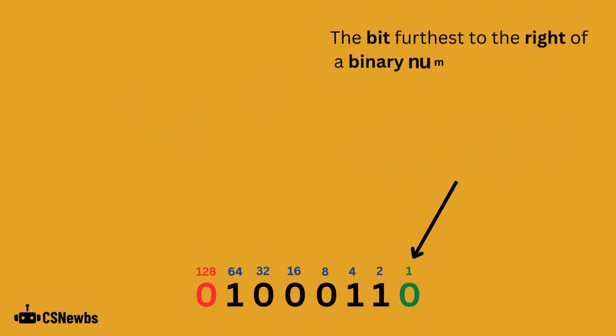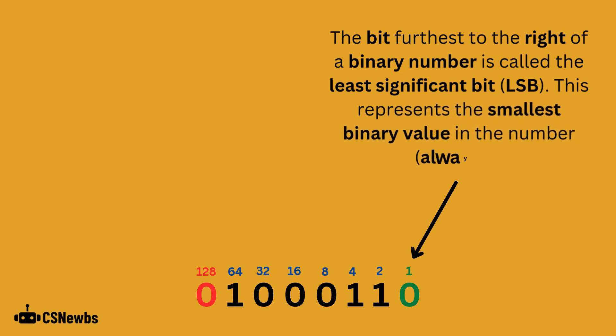The bit furthest to the right of a binary number is called the least significant bit. This represents the smallest binary value in the number, which will always represent 1.